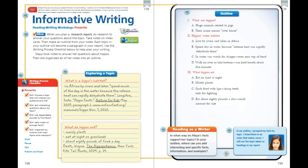So if you guys could turn in your student book to page 738, we're going to look at the brainstorming ideas written by Maya. It says that when you plan a research report, you do research to answer your questions about the topic. You take notes on index cards, which is really handy, and then you make an outline from your notes. Each topic in your outline will become a paragraph in your report. Use the writing process checklist right here on the side of page 738 to help you plan your writing.